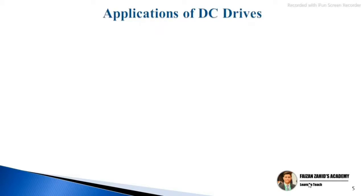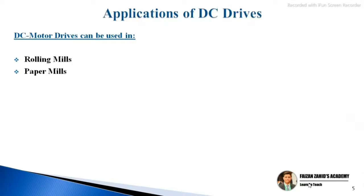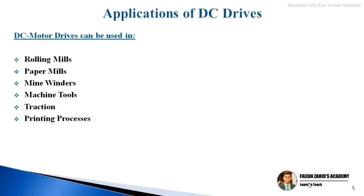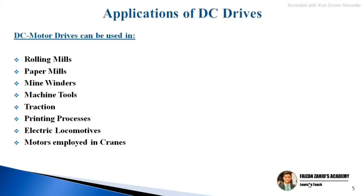Applications of DC drives: DC motor drives can be used in rolling mills, paper mills, mine winders, machine tools, traction, printing processes, electric locomotives, and motors employed in cranes. These are some of the key DC drive applications, though there are other applications as well.